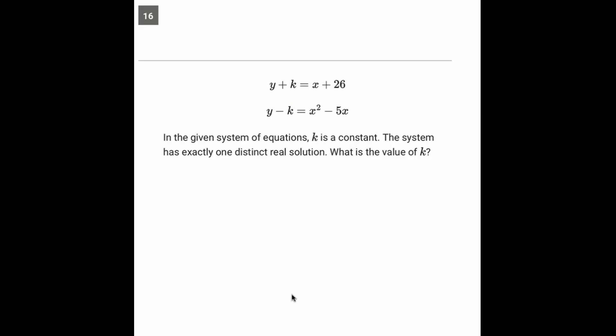So let's do that here. For the first one, we can take away K from both sides. So Y equals X plus 26 minus K. And for the second, you can add K to both sides. Y equals X squared minus 5X plus K.